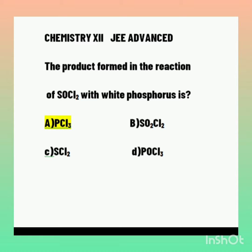The reaction is: P4 + 8SOCl2 gives 4PCl3 + 4SO2 + 2S2Cl2. So the product formed in the reaction of SOCl2 with white phosphorus is PCl3 — phosphorus trichloride.